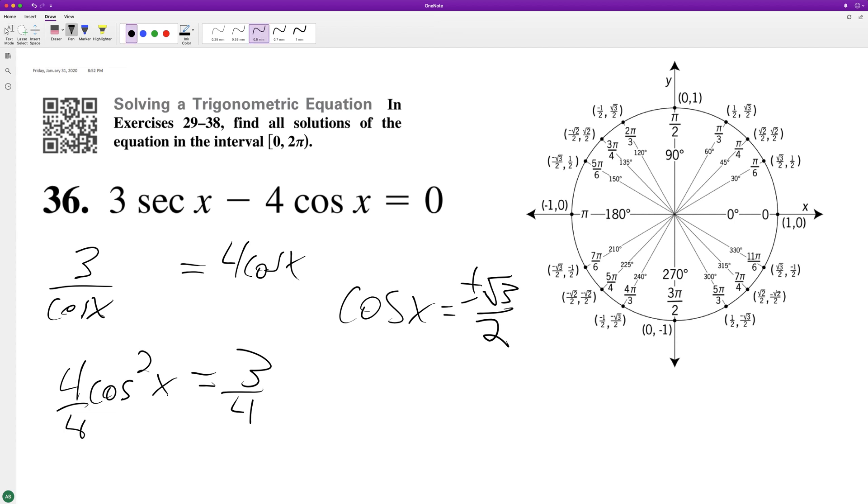So where does cosine equal that? It equals it at π over 6, 5π over 6, 7π over 6, and 11π over 6.